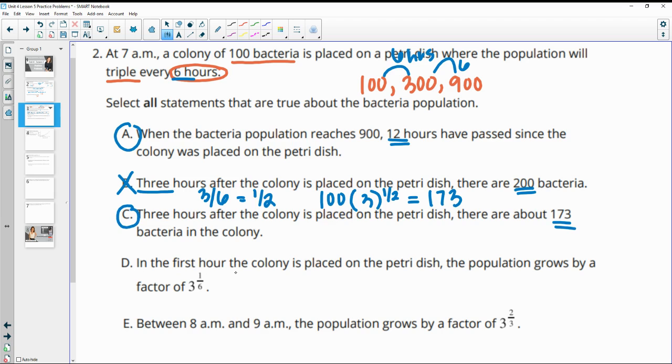Then D says in the first hour the colony is placed on the Petri dish, the population grows by a factor of 3 to the one sixth. So this is after one hour out of the tripling period, which is six. So this would be correct. One sixth of a tripling period. So D would be correct.